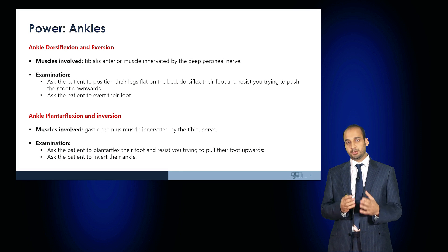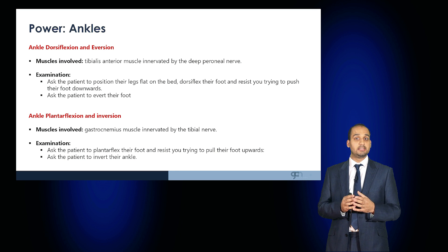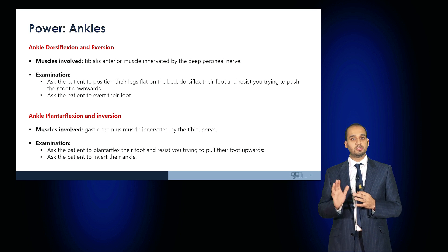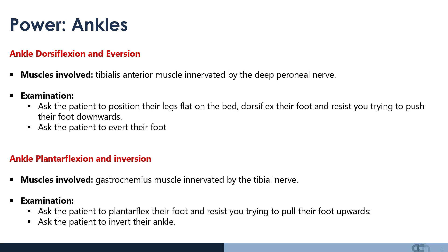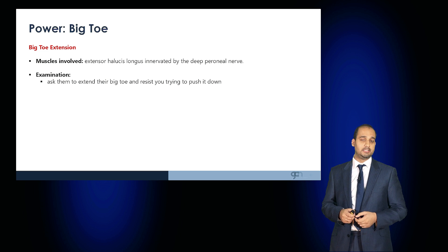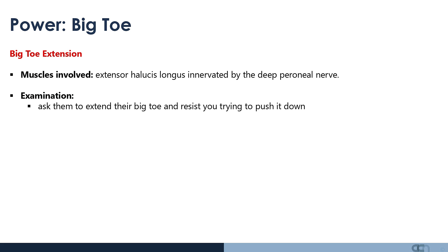Examine the ankles for dorsiflexion and eversion, mediated by the tibialis anterior muscle innervated by the deep peroneal nerve. Ask the patient to dorsiflex their foot and resist you pushing it downwards, then ask them to evert their foot. Ankle plantar flexion and inversion is mediated through the gastrocnemius muscle innervated by the tibial nerve: ask the patient to plantar flex their foot and resist you pulling it upwards, then ask them to invert their ankle. You can also examine power in the big toe via the extensor hallucis longus, innervated by the deep peroneal nerve: ask the patient to extend the big toe and resist you pushing it down.